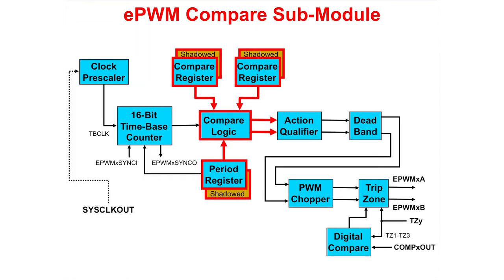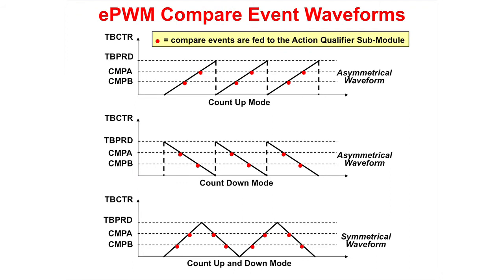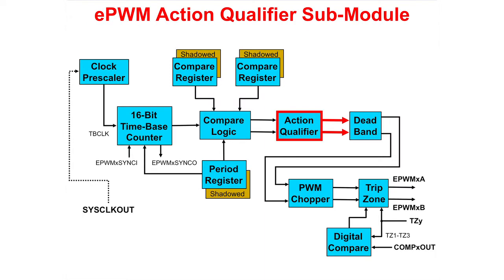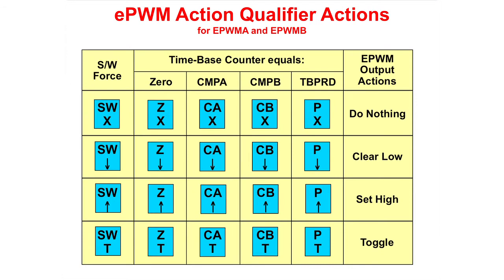The compare submodule uses two compare registers to detect time-based count matches. These compare match events are fed into the action qualifier submodule. The output of this block feeds two signals into the action qualifier. The figures here show the compare matches that are fed into the action qualifier. With count up and count down mode, there are matches on the up count and down count. The action qualifier submodule uses inputs from the compare logic and time-based counter to generate various actions on the output pins, and these modules are the main components used to generate a basic PWM waveform. This table shows the various action qualifier compare match options for when the time-based counter equals zero, compare A match, compare B match, and period match.